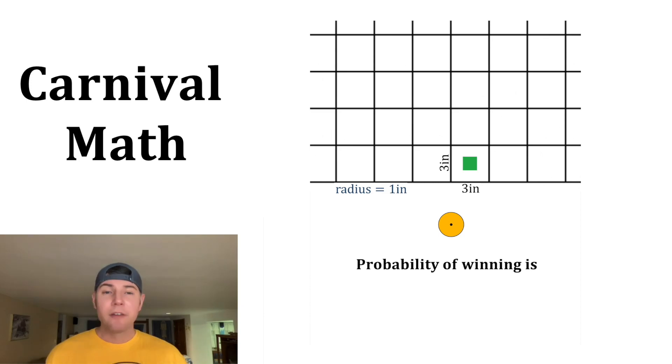So now to find the probability of winning. Every white box and the corresponding green box will be the same in the entire grid, so we can just focus on one of them. The probability will be the area of the green box divided by the area of the white box. The area of the green box will be one squared, and the area of the white box will be three squared. And that is equal to one ninth.